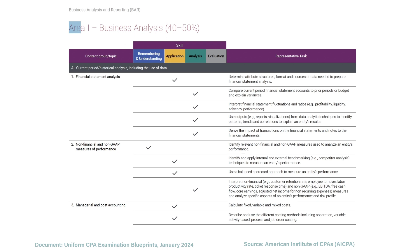Area one is Business Analysis. We have current period and historical analysis, which involves comparing financial statement results — such as looking at prior period financial statements to the current period. It involves ratio analysis like profitability ratios and liquidity ratios, using reports and visualizations to come to meaningful conclusions, and looking at different transactions and notes of the financial statements.